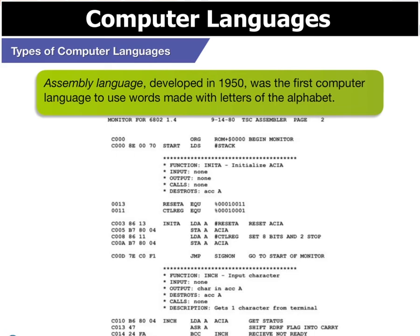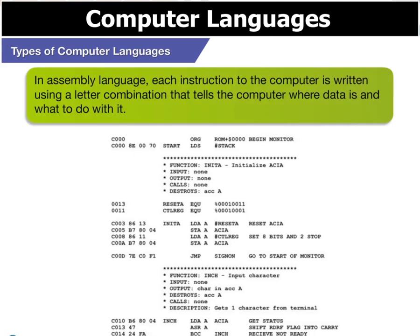Assembly language, developed in 1950, was the first computer language to use words made with letters of the alphabet. In assembly language, each instruction to the computer is written using a letter combination that tells the computer where data is and what to do with it.